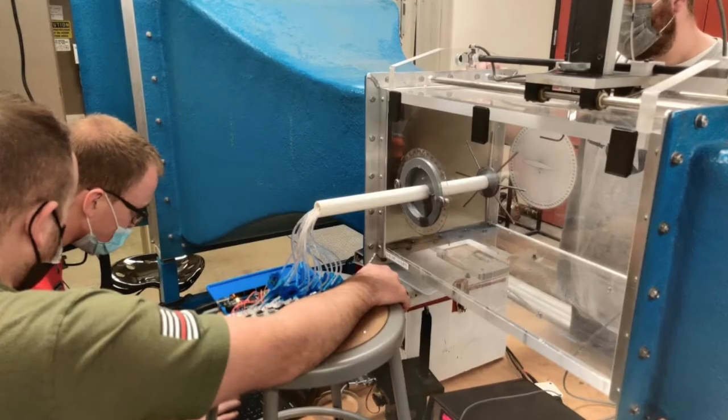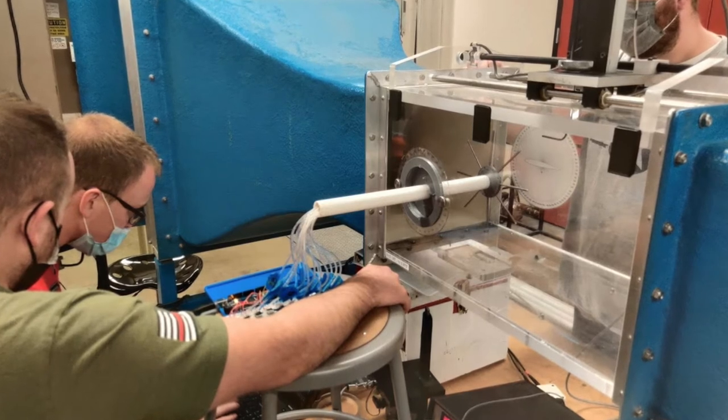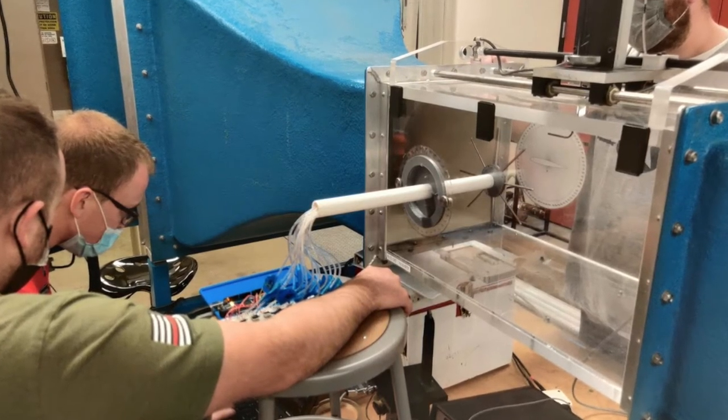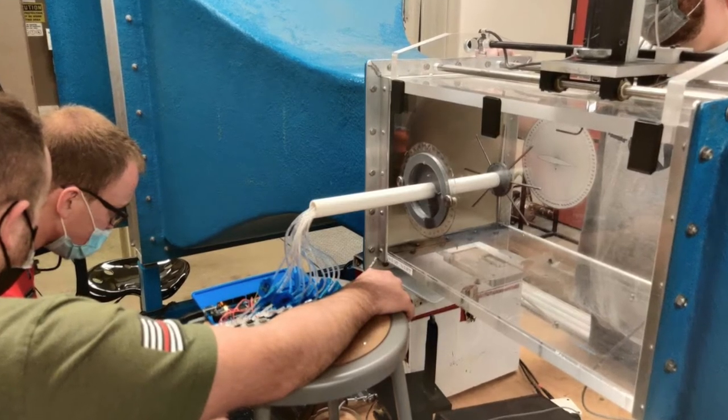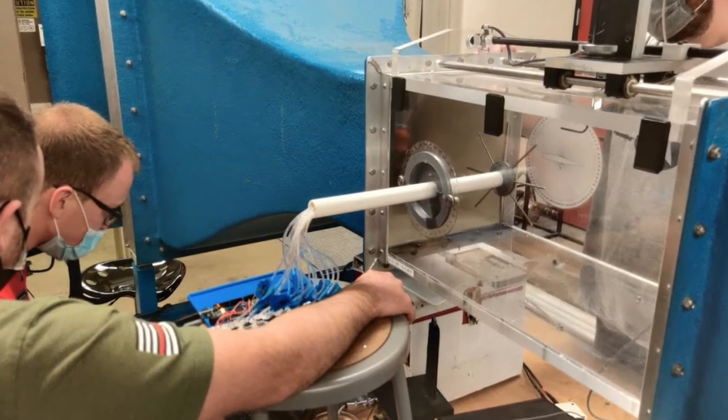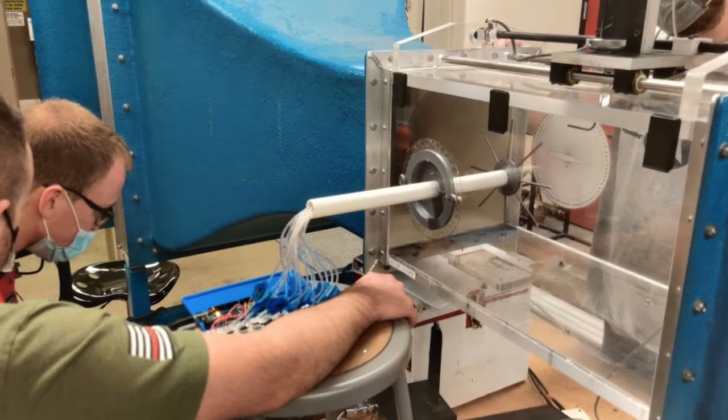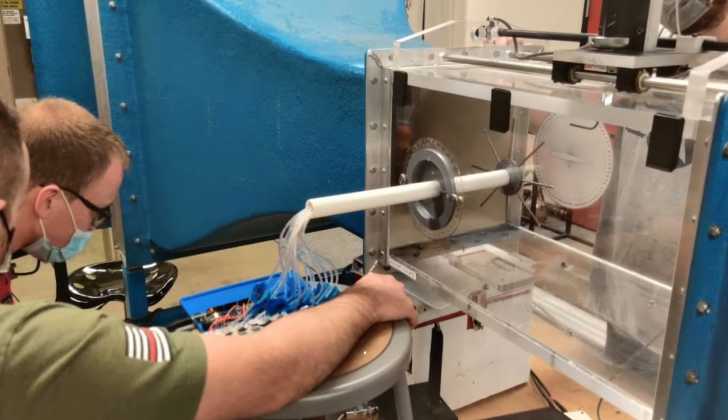We chose pitot tubes as our measurement instrument because they allow us to measure the velocity of the flow going into the tubes. By creating an array of pitot tubes like we have, we can get multiple data points for flow velocity at different points in space, which will allow us to form a good idea about the flow conditions the sensor array is in.